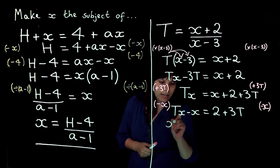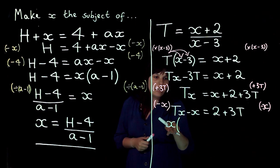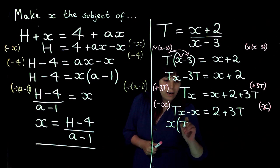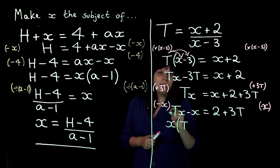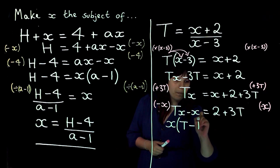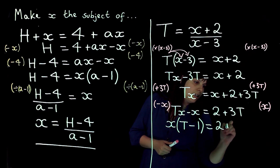So I'm going to factorize my x out and x times what gives me tx, well that's going to be t. And x times what gives me minus x, well that's going to be minus 1. And then this side is going to stay the same.